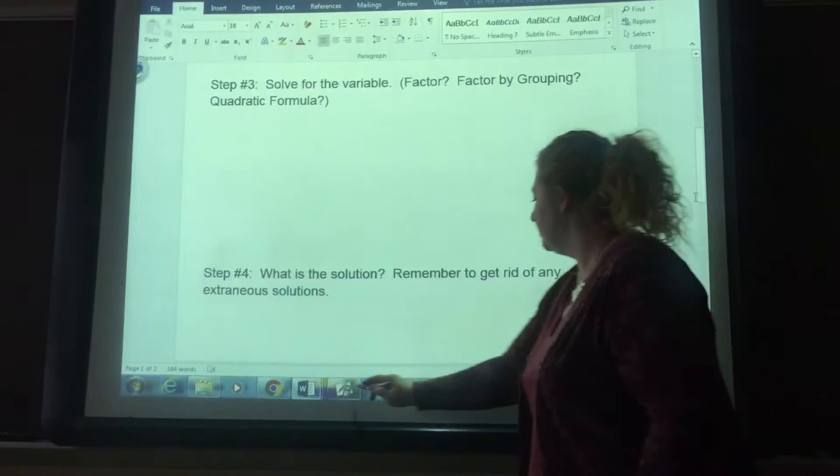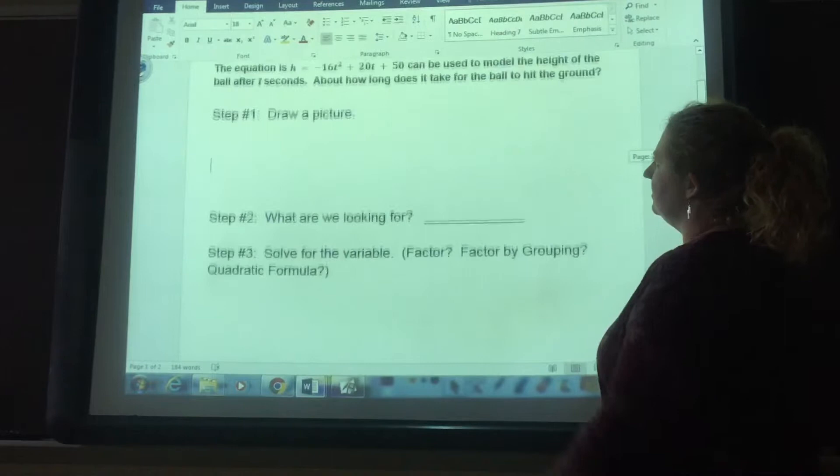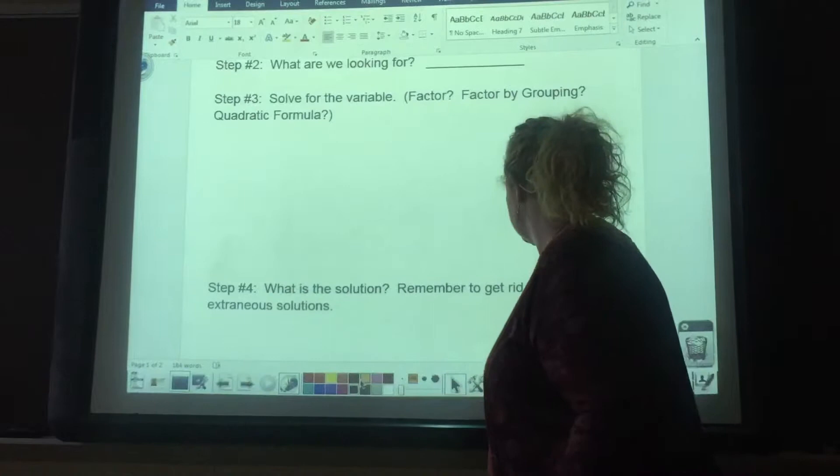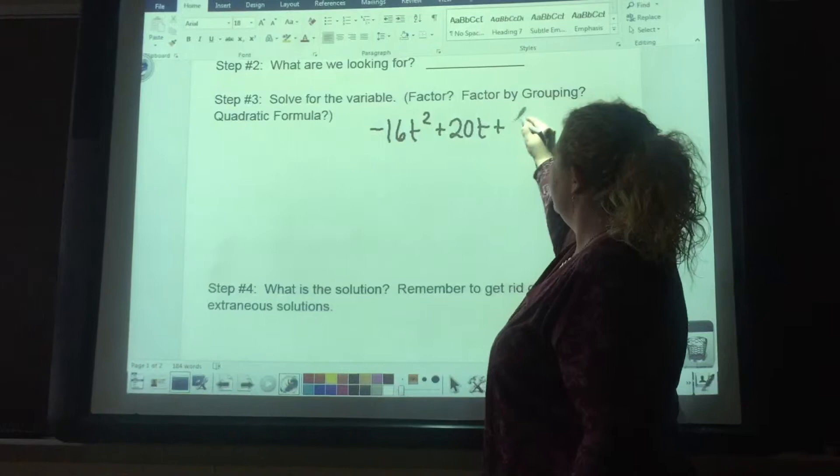So our equation, again, is negative 16t squared plus 20t plus 50, and we will set that equal to 0. The question becomes, how do we solve it?